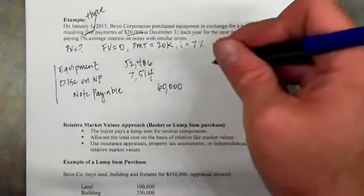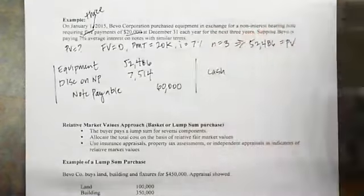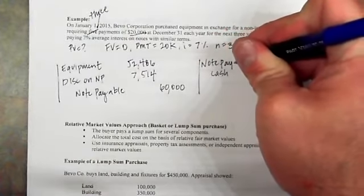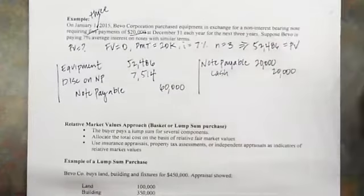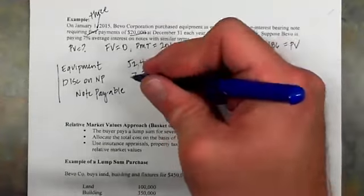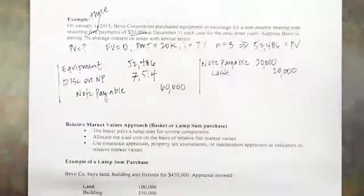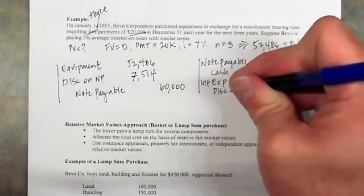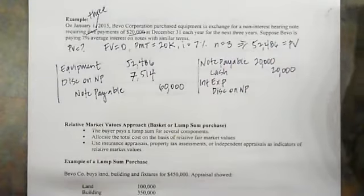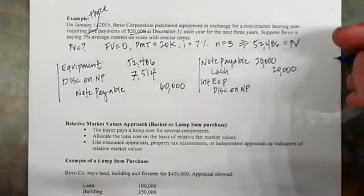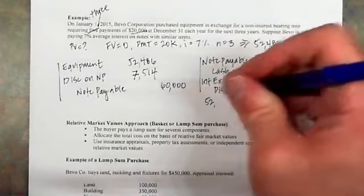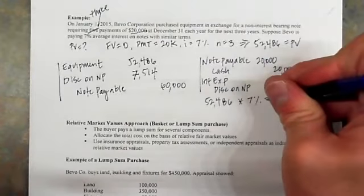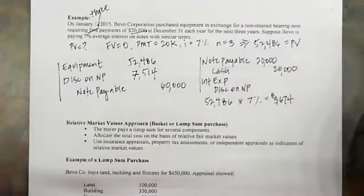At the end of the first year, we would have a cash payment being made of $20,000. The note payable would be decreased by that cash payment. In order to record the amortization of the discount over the year, we would have interest expense that we recognize as we reduce the discount on the note payable. We want to use the effective interest method — take the carrying value of the note at the beginning of the year, $52,486, and multiply it by 7%, which gives $3,674 of interest expense to recognize.